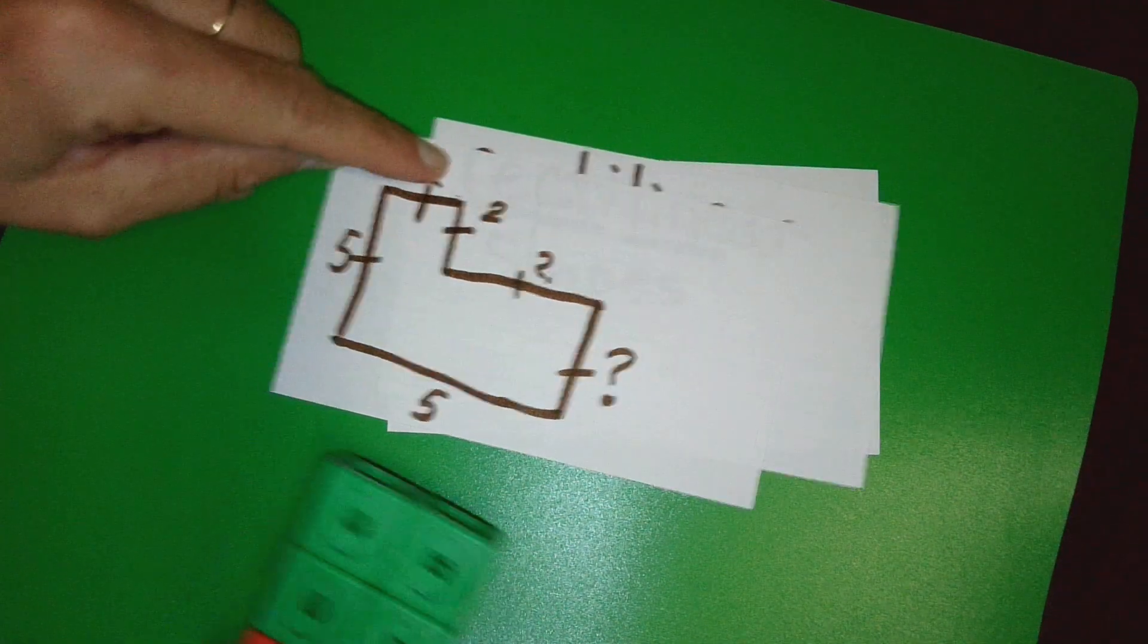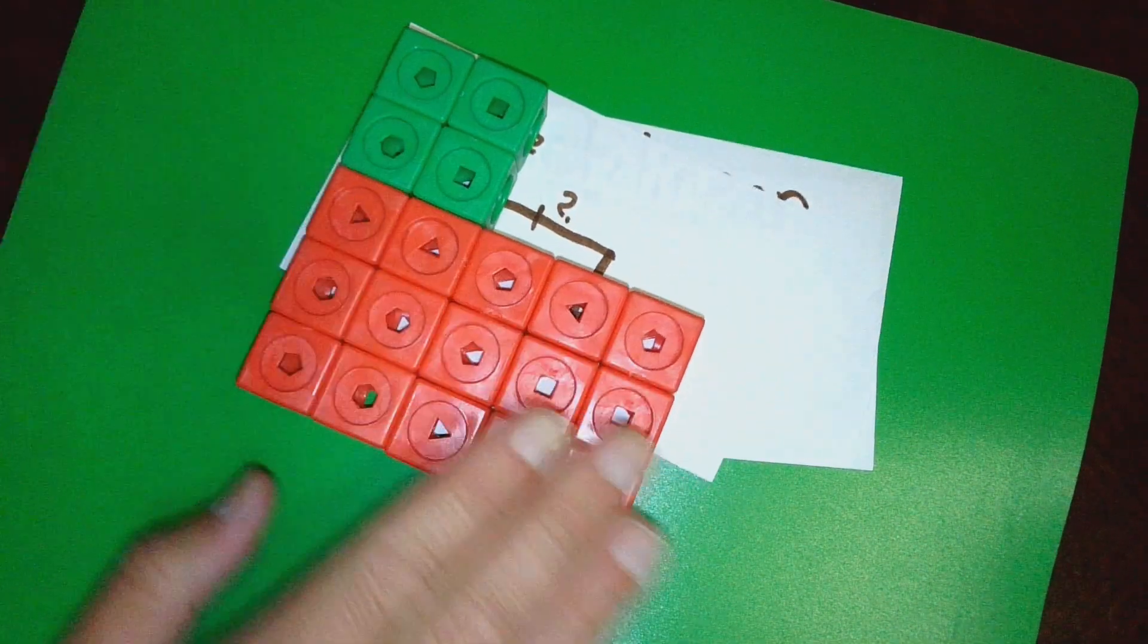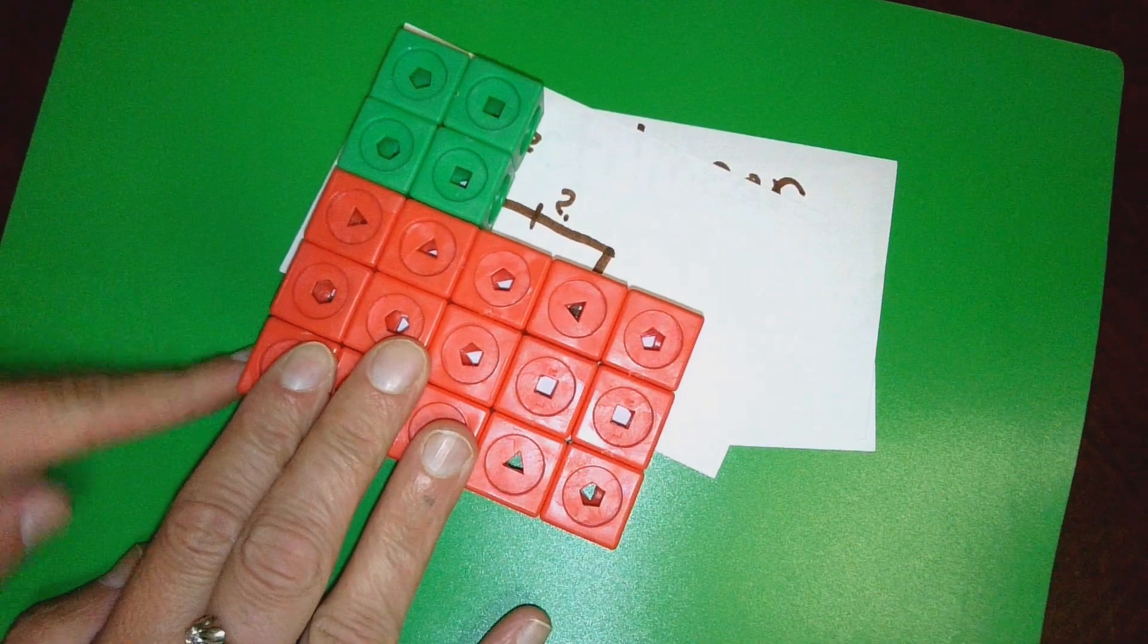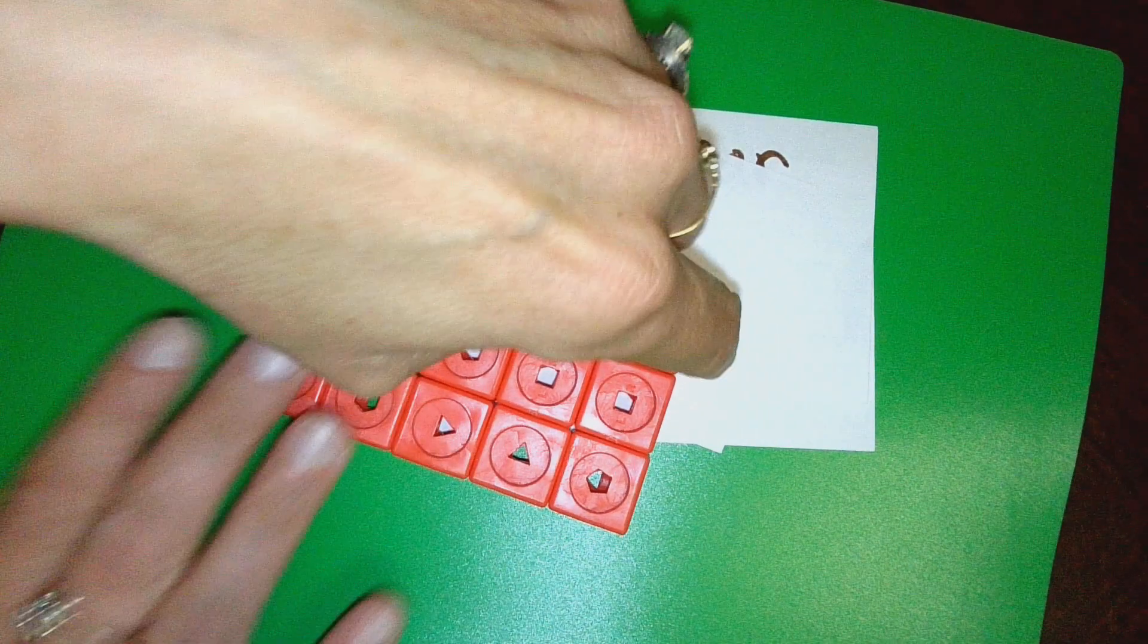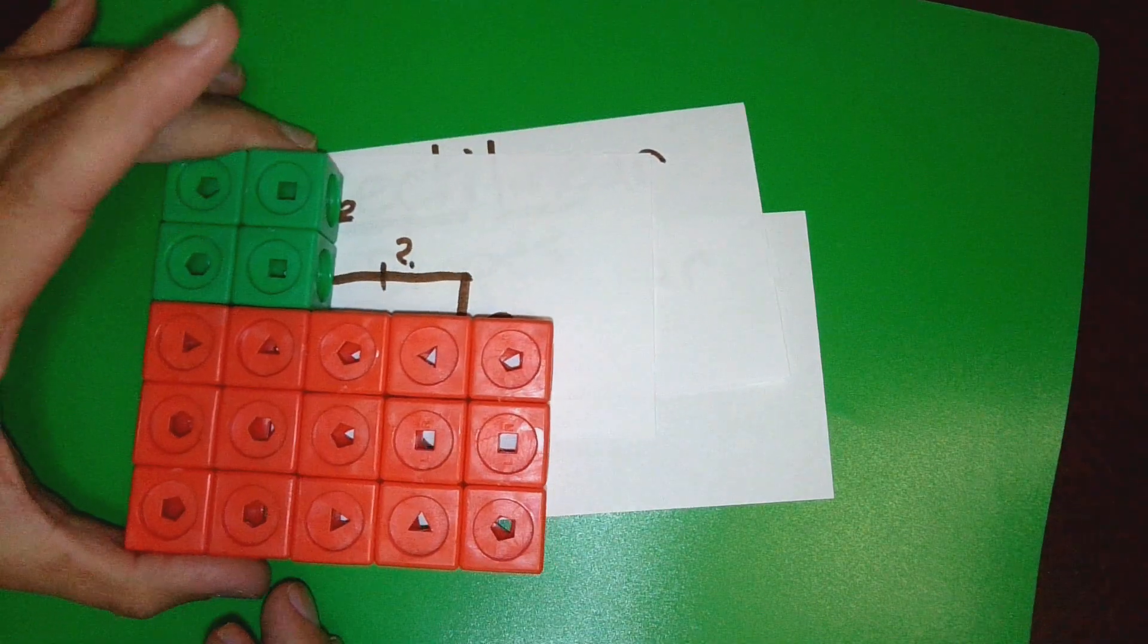This helps us then solve. If this is 2 and this is 5, then this is 1, 2, 3. If this is 5, this is 2, 2, 3, 4, 5, that's 3. That helps you solve the missing link.